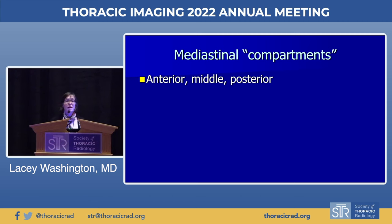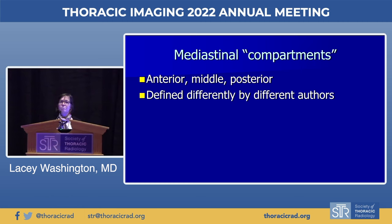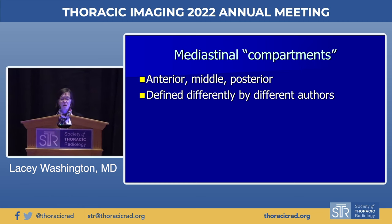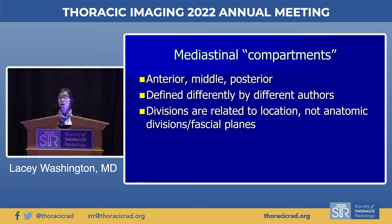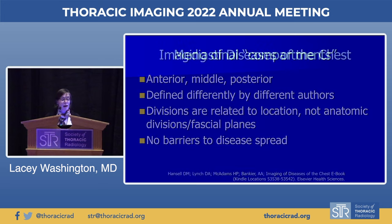We're all familiar with the idea of anterior, middle, and posterior mediastinal compartments, but what we may not all be as familiar with — and what confused me when I was a resident — is that these compartments are defined differently by different authors. Unlike the peritoneal spaces, the divisions in the mediastinum are just related to location; there are no fascial planes dividing the different parts.